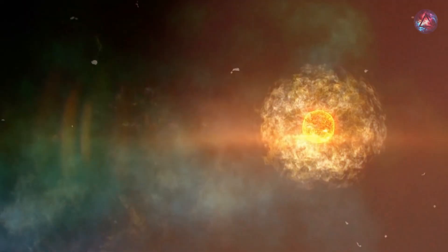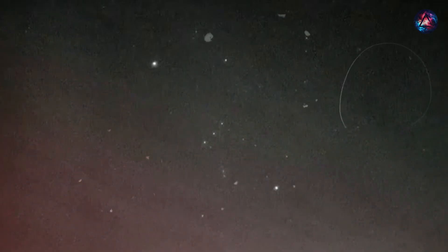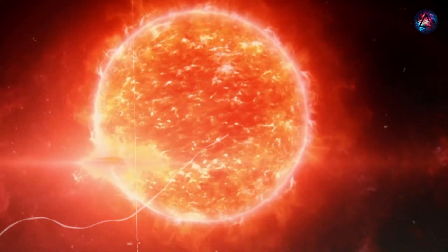In our sky is this one, Betelgeuse. It's a red giant star. If you put it where the sun is, it would extend out to the orbit of Jupiter. It's enormous. It's very unstable. It's about to explode.